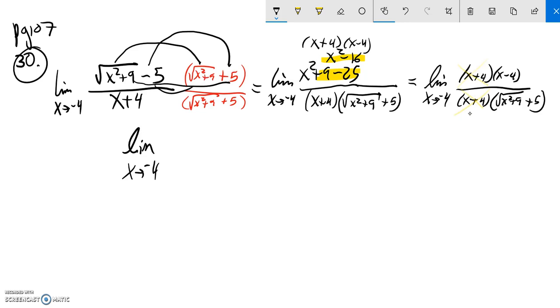So what I'm left with now is a limit of this: x minus 4 over square root x squared plus 9 plus 5. So let me try some direct substitution here. I'm going to plug in that negative 4, so negative 4 minus 4, down here I have negative 4 squared plus 9 plus 5.